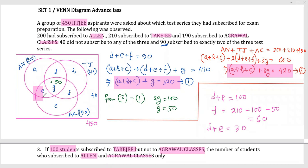But I need to find 'e' alone. I can also find e plus c from Agarwal Classes: 190 minus g plus f, which is 190 minus 110, equals 80. So I have d plus e equals 30 and e plus c equals 80, but e alone cannot be isolated. Therefore, the answer cannot be determined — CBD.